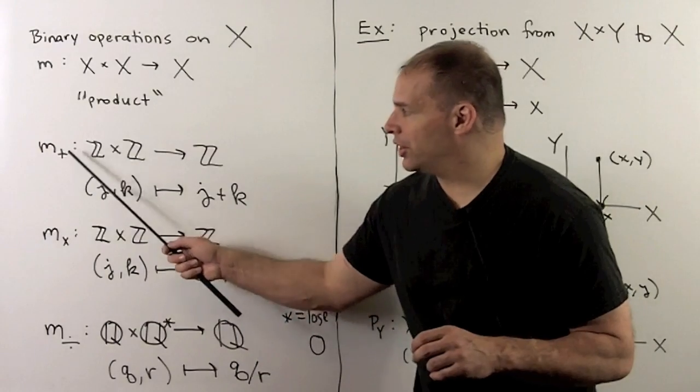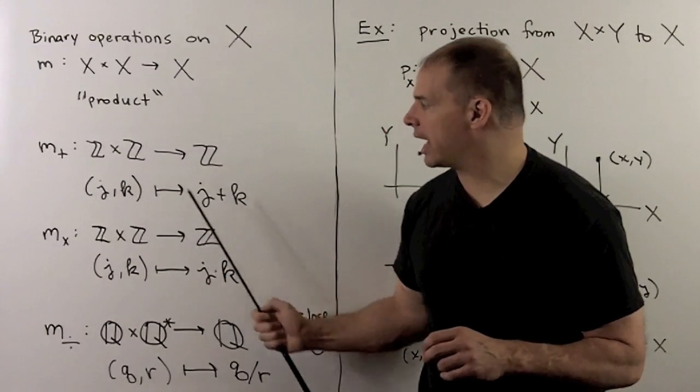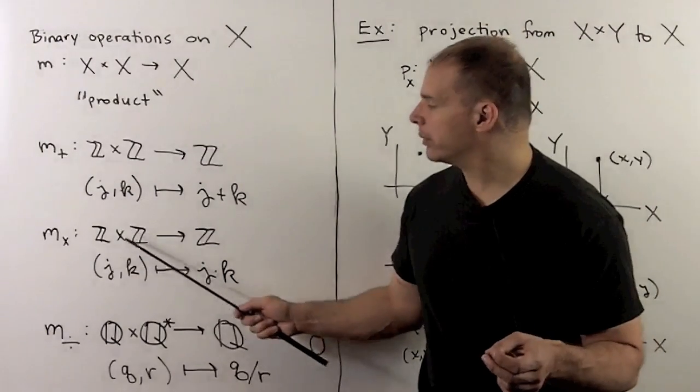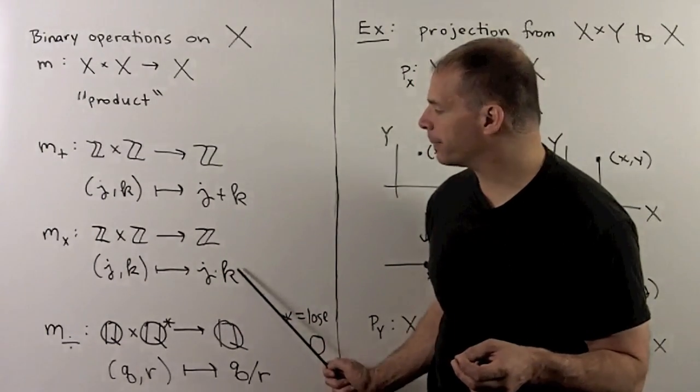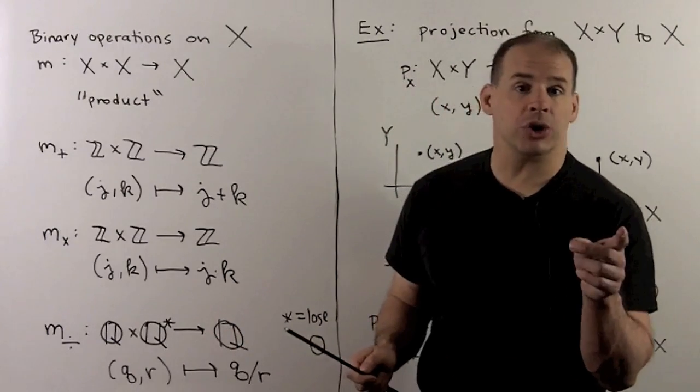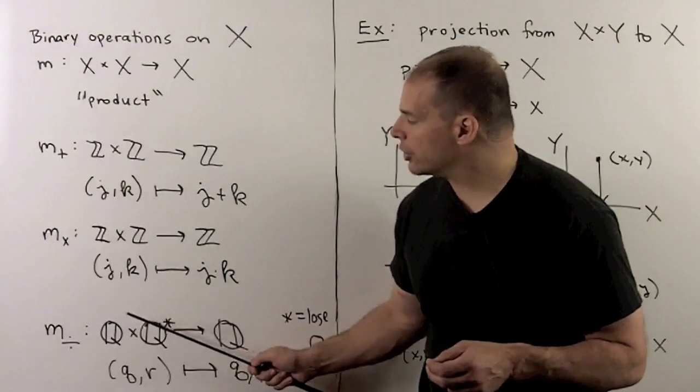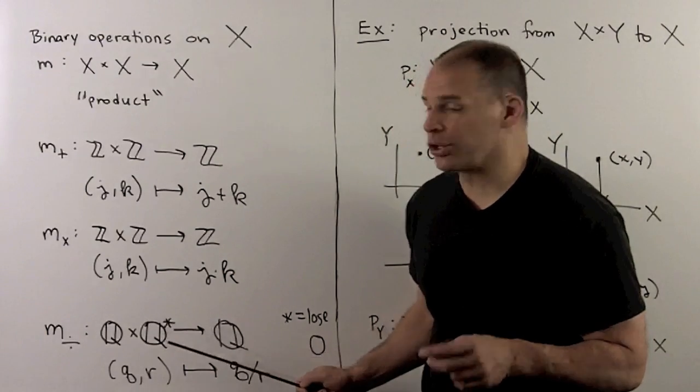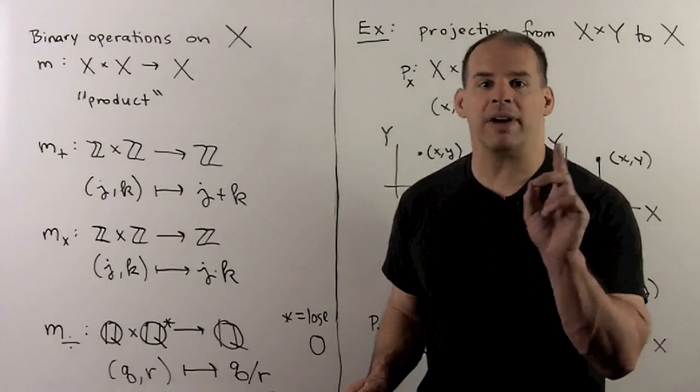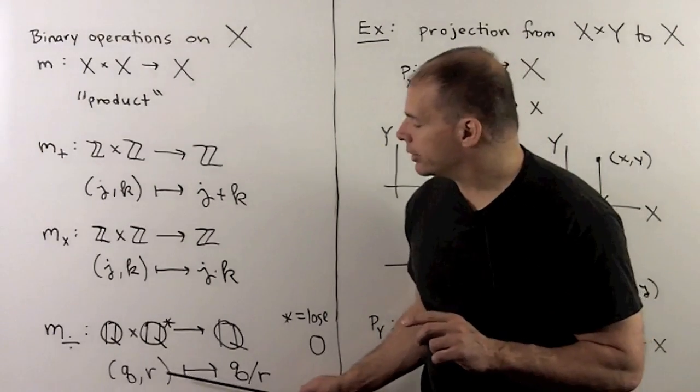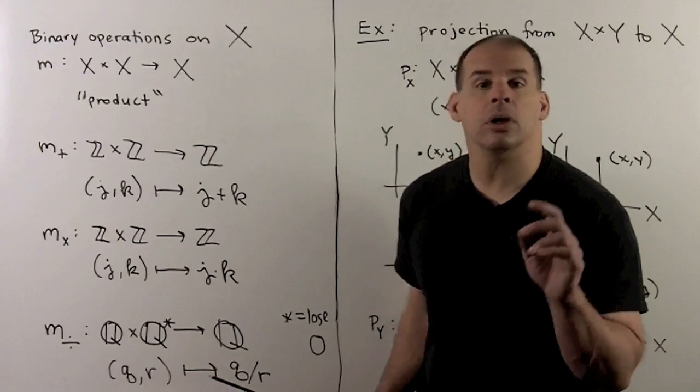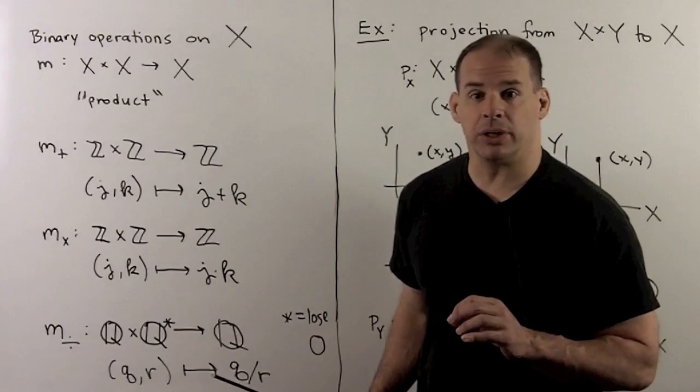We already know many examples of these. We could use addition of integers, so we just send j comma k to j plus k. We have multiplication of integers. So, we send j comma k to j times k. And, if I want to do division, we don't use integers. Instead, we go to the rationals. So, we'll take the rationals, cross with the rational star, where star just means throw away zero. So, the idea here, I don't want to divide by zero. So, here, we'll send q comma r to q divided by r. We'll say more about division by zero in a little bit.